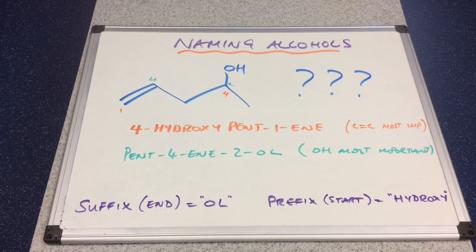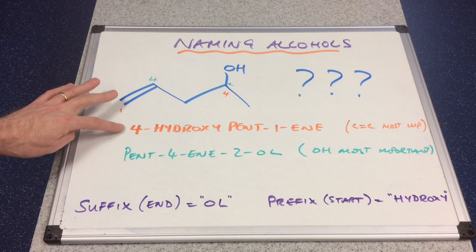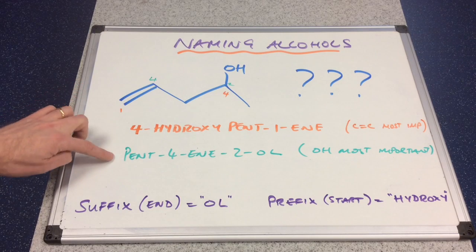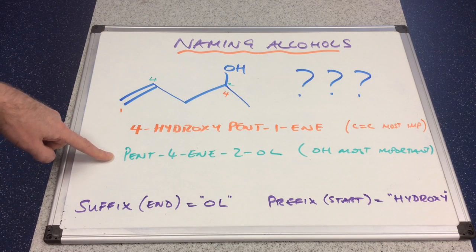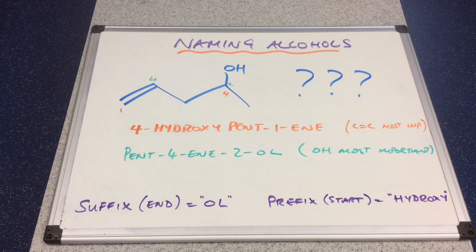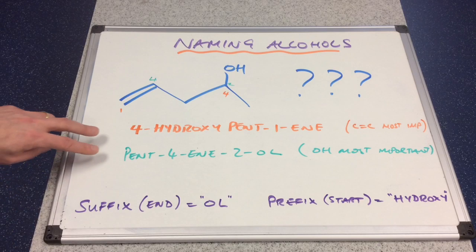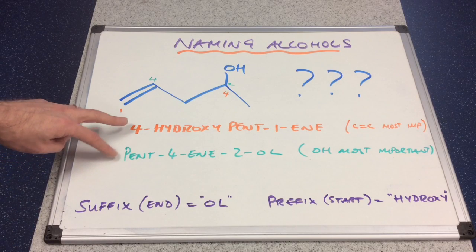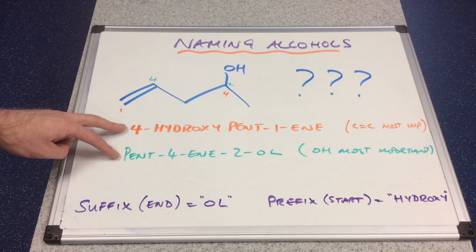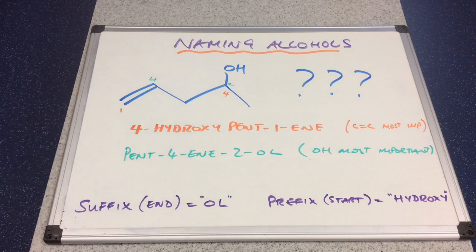So we've got two possible names: the orange name and the green name — which is the actual IUPAC name? Now I think if they asked you this in the exam, the priority rules I'm going to show you would not be expected, so don't worry about that. But I think if you came up with either the orange name or the green name, they would credit you the marks.